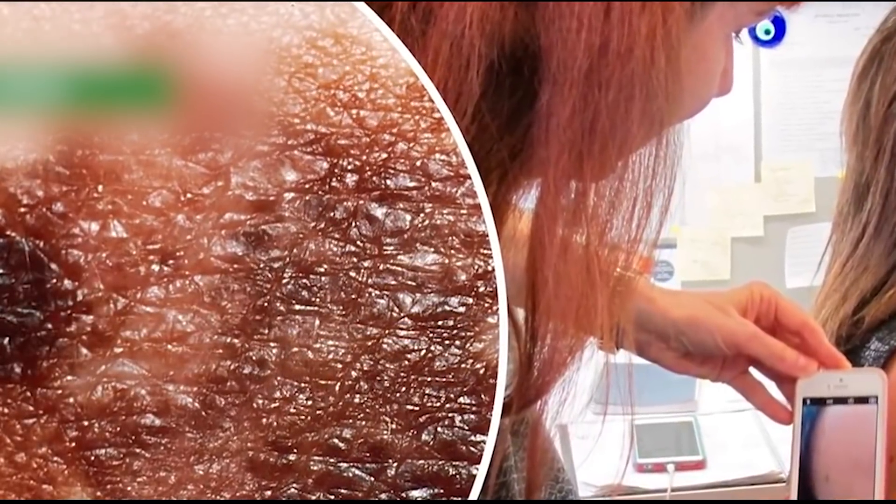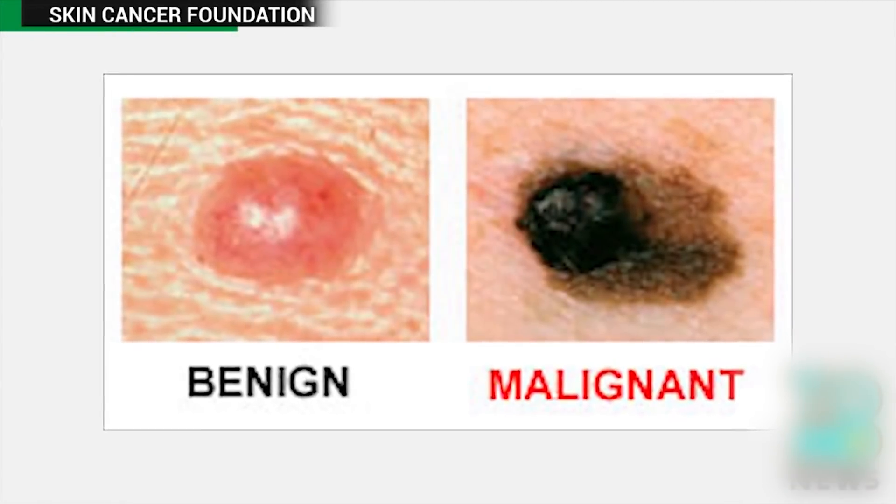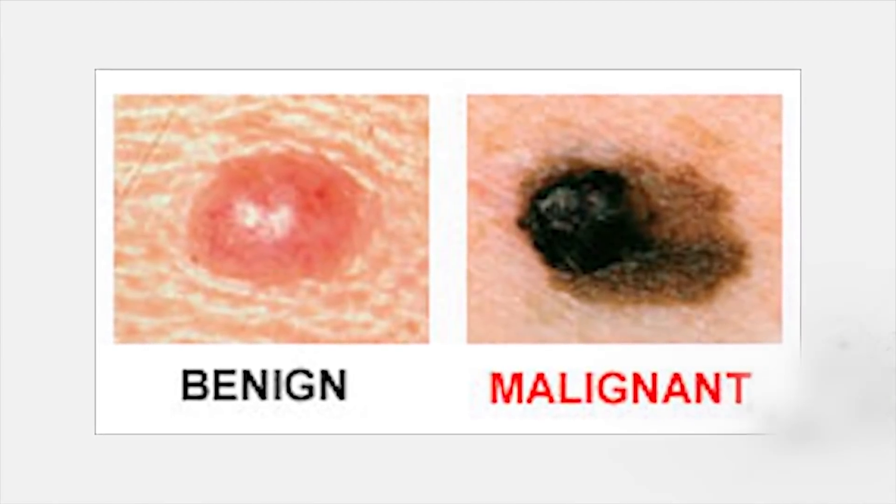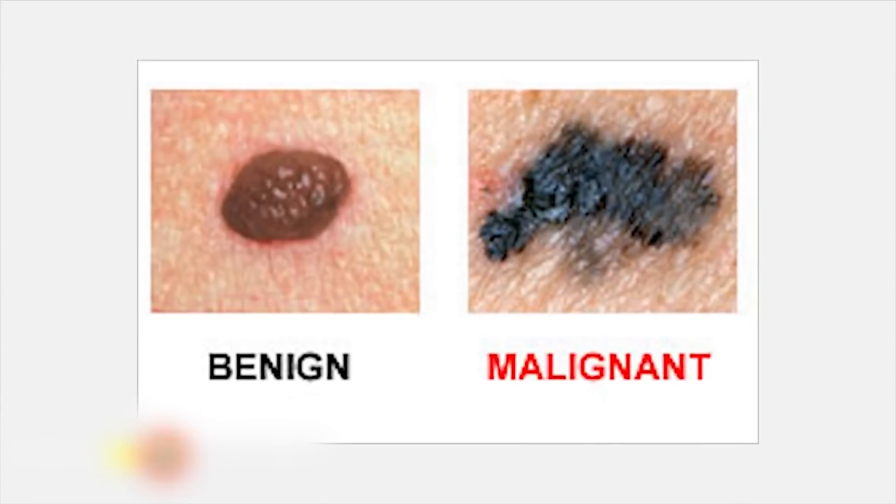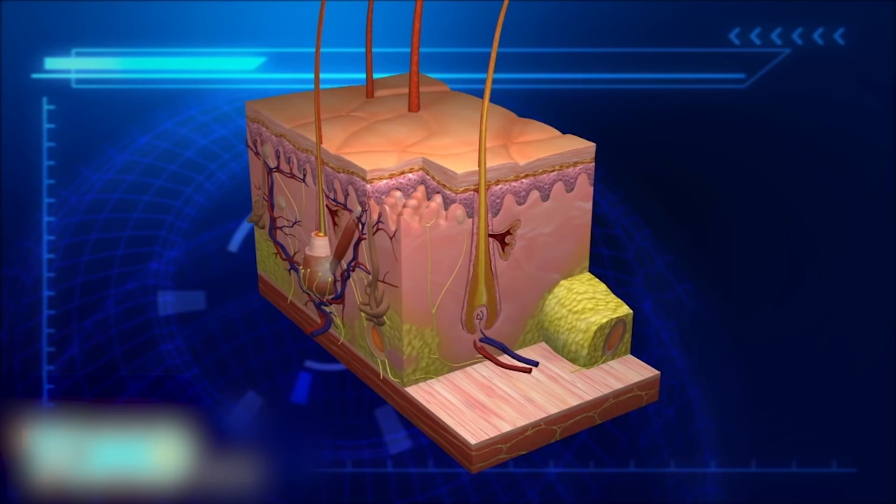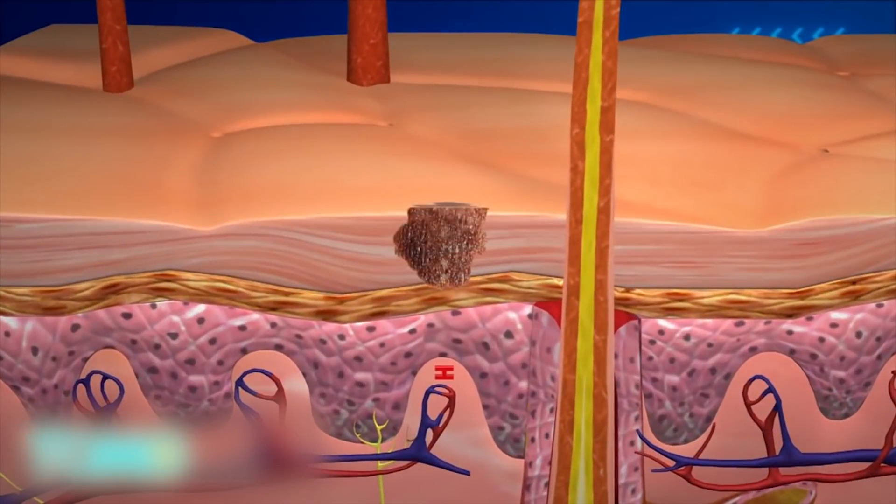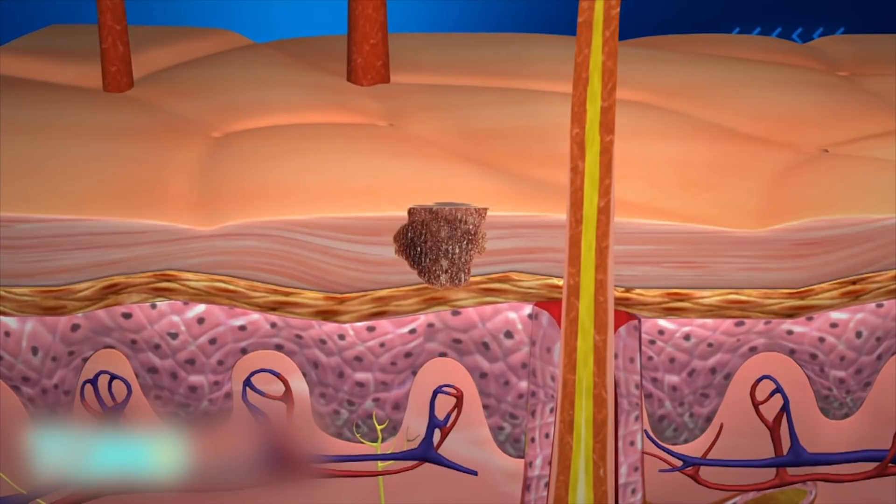Israeli scientists show how melanoma spreads in the body. Scientists at Tel Aviv University have made a landmark discovery on melanoma, a brutally aggressive form of skin cancer that kills a person every 52 minutes. Melanoma forms in the epidermis of the skin. At this stage, the cancer cells are not able to spread, as they have no access to blood vessels.